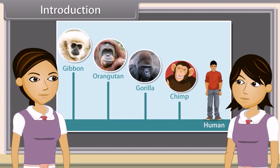Do you want to say that this chart shows that human beings had chimpanzees as their ancestors, chimpanzees' ancestors were gorillas and so on? Let me explain to you in detail how various life forms were evolved on the earth, one after the other.